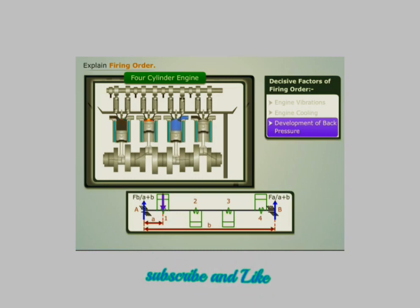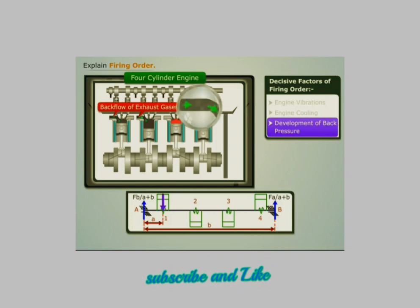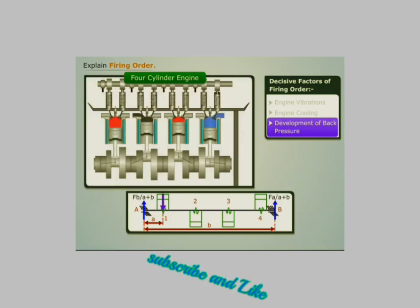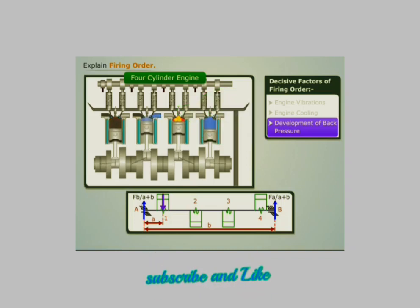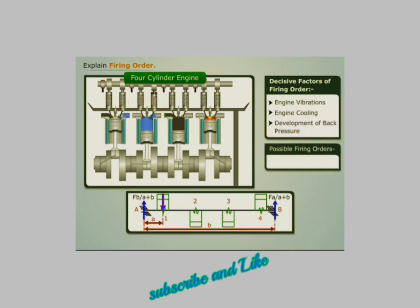Moreover, firing the first and second cylinders in succession may result in high pressure in the exhaust pipe, which could initiate the backflow of exhaust gases. However, if we fire the third cylinder after the first cylinder, the exhaust gases will have enough time to leave the engine and would not create pressure in the exhaust pipe.